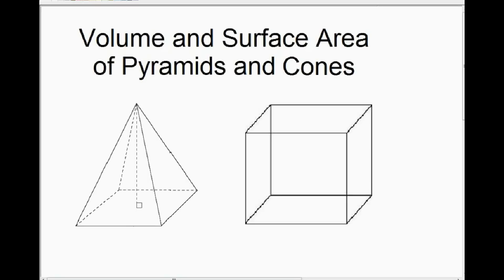A cube is just a rectangular prism. And as we talked about in the video on calculating the volume of rectangular prisms, we do that just like any prism by calculating the area of the base times the height. So if we have a cube, on the base we have a square. And to calculate the area of a square, we do length times width.